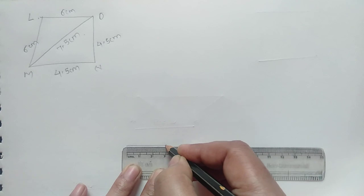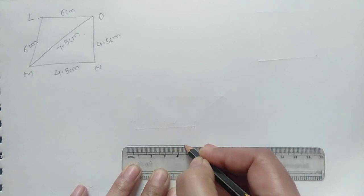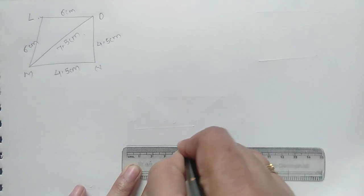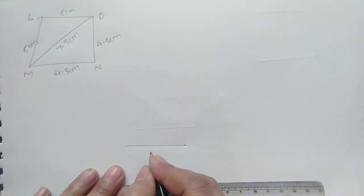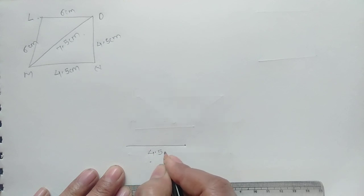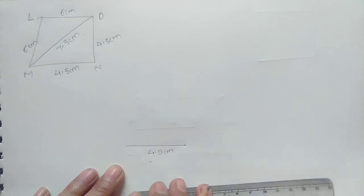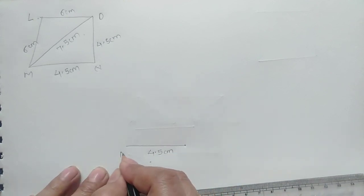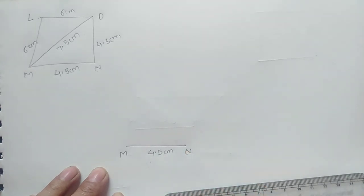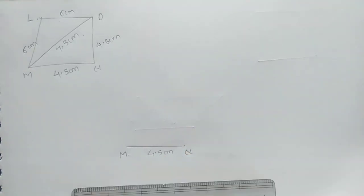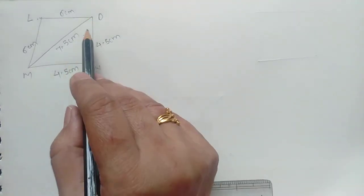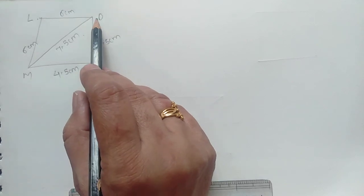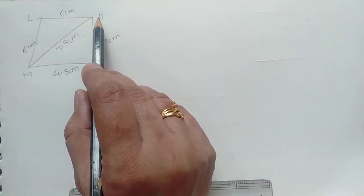After marking 4.5 cm, give the labels M and N. Now we will draw the point O.